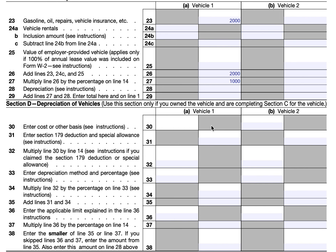We'll say the car was purchased for $50,000. We do not have a special allowance or Section 179 deduction, so we back out the 50% business use and arrive at $25,000 as the depreciable basis. On line 33 we calculate depreciation expense. If you do not use the Section 179 deduction or special depreciation allowance, the form instructions provide specific guidance — those provisions allow you to accelerate depreciation beyond what straight-line would allow.